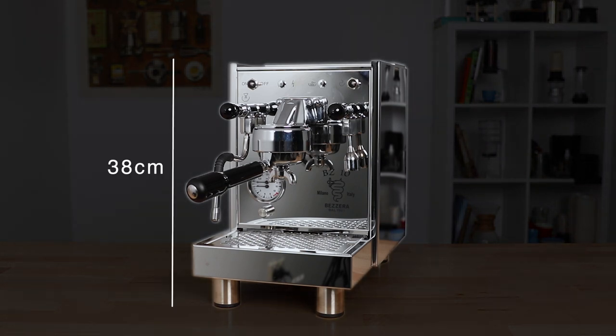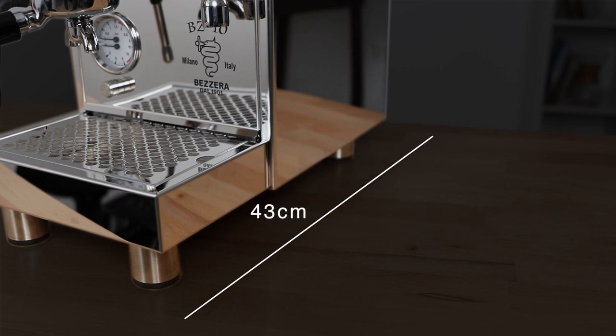It stands at 38 centimeters tall, but keep an extra 24 centimeters above that if you do want to remove that water tank. It's 43 centimeters deep, except you could get away with 40 centimeters with that drip tray overhanging as the feet are that close together.